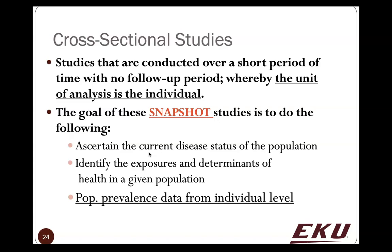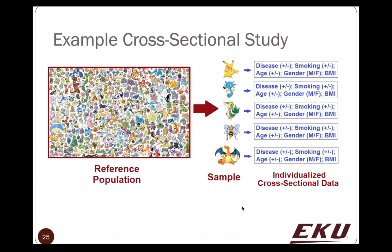You may also be interested in asking questions about the current determinants of health, which could include socioeconomic factors or behavioral factors like smoking. The data are obtained as prevalence data at the individual level, which gives us the ability to potentially estimate prevalence odds ratios — useful for risk determination.